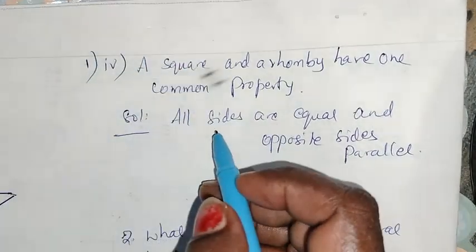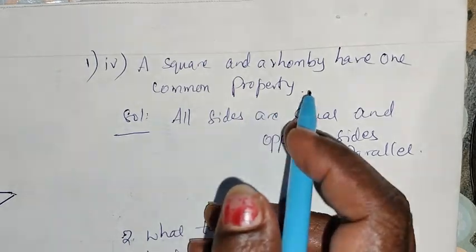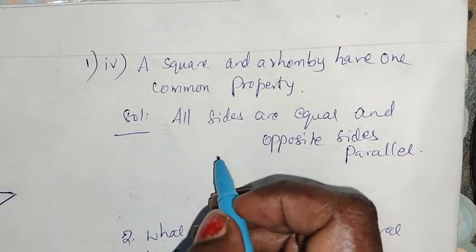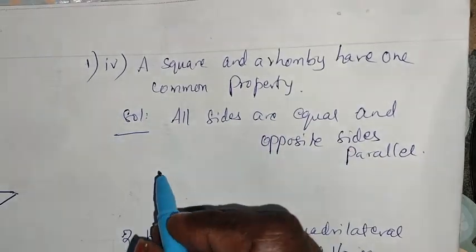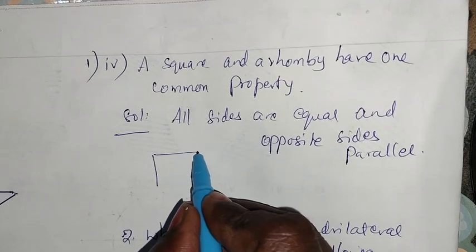Fourth subdivision: A square and a rhombus have one common property. Square — all sides are equal.